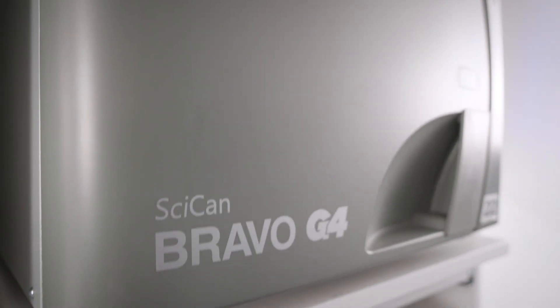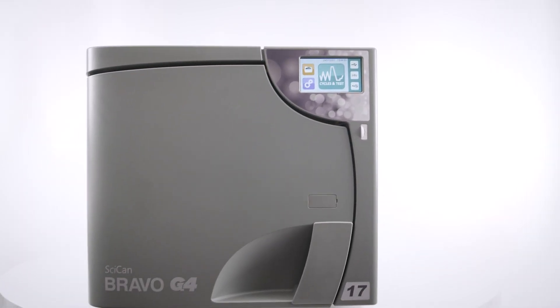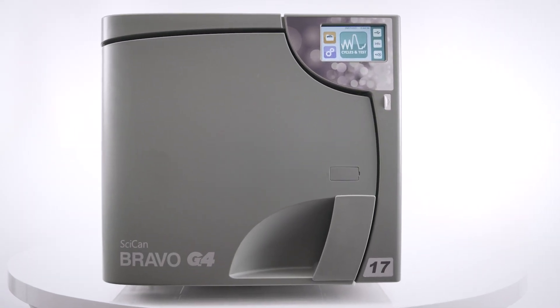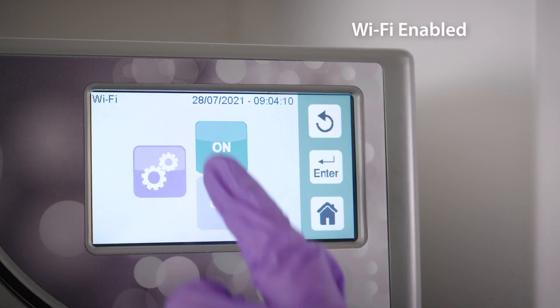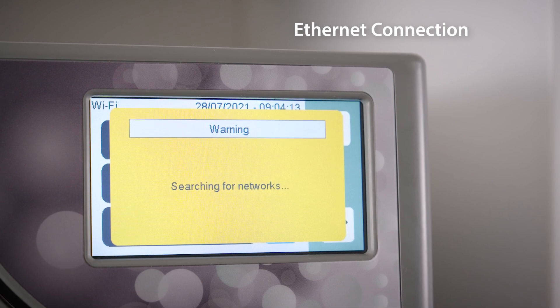If your Bravo G4 has not been connected to the G4 network, consult your operator's manual to register your unit using the cloud web portal activation code. Easily connect to the G4 network using a wireless network or Ethernet connection in a few simple steps.